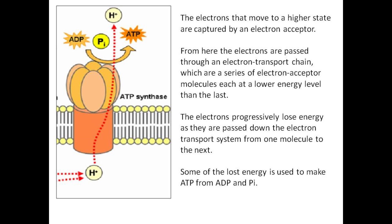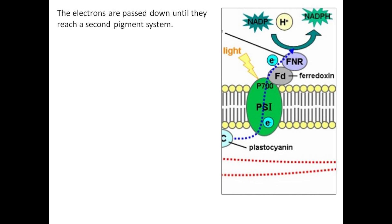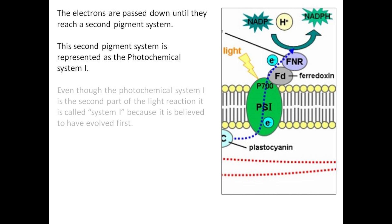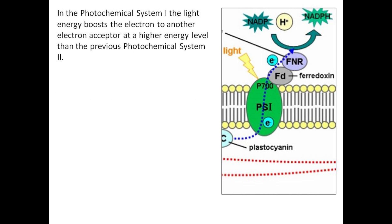Some of the lost energy is used to make ATP from ADP and Pi. The electrons are passed down until they reach photosystem I. Even though photosystem I is the second part of the light reaction, it is called system I because it is believed to have evolved first. In photosystem I, the light energy boosts the electron to another electron acceptor at a higher energy level than the previous photosystem II.